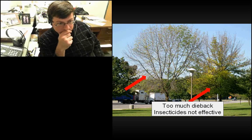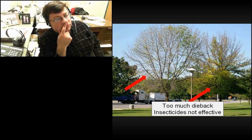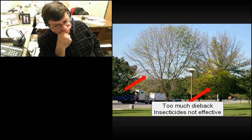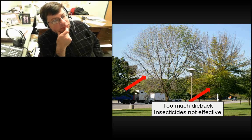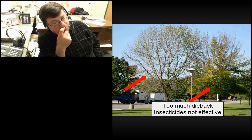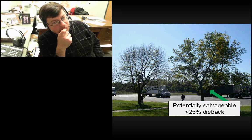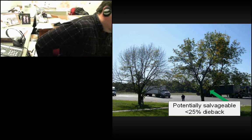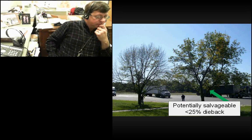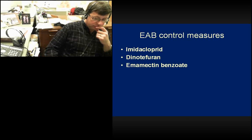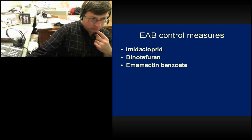Chemical control. First, any chemical control only has a chance to work if the tree is not too far gone. Trees with around 90% dieback or even 40–50% dieback are too far gone — they don't stand a chance. The current recommendation is that if a tree has less than about 25% dieback, it has a chance. Beyond that, don't waste your time and money. The big three chemical options are imidacloprid, dinotefuran, and emamectin benzoate.